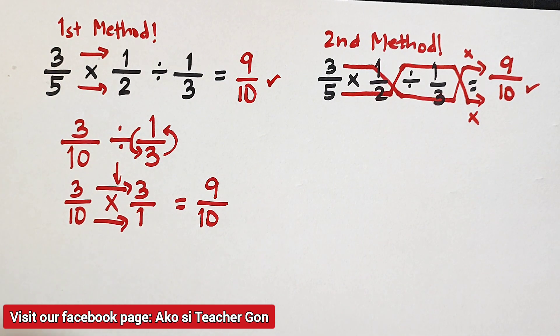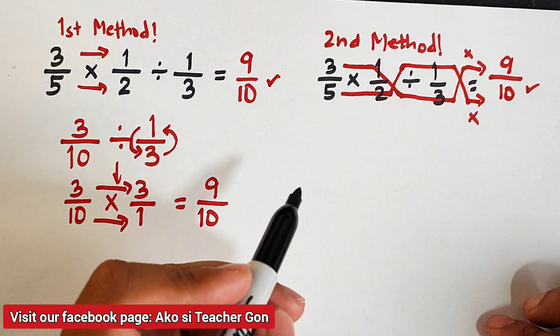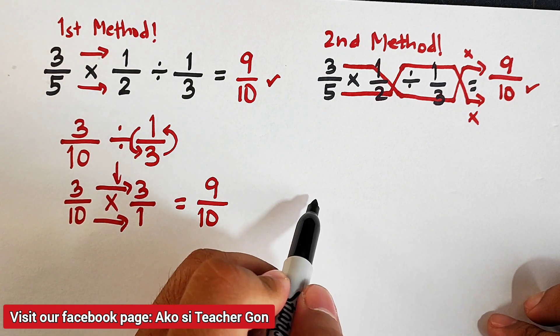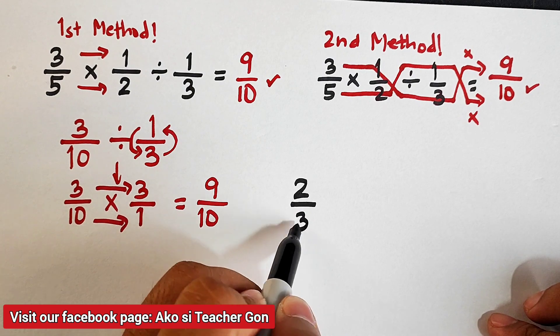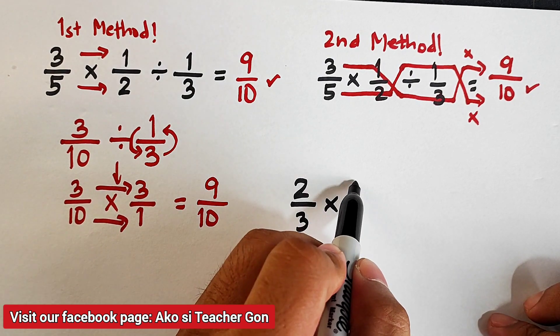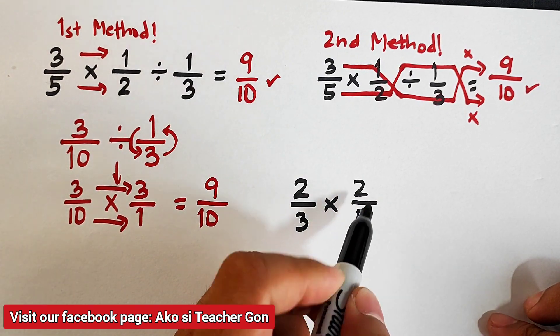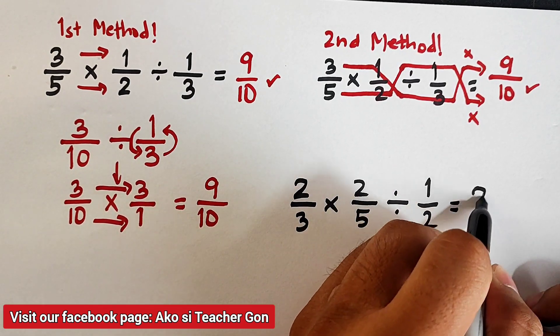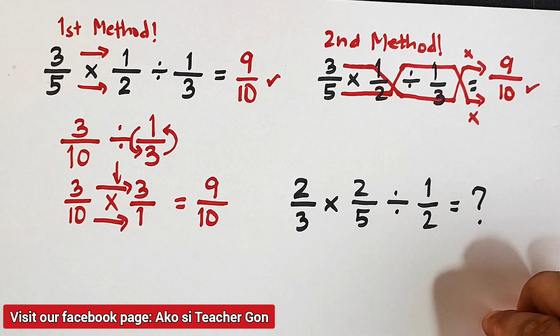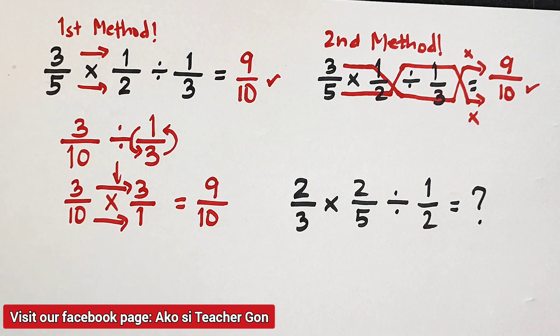Now, as part of our routine here in our videos, I will let you answer this kind of problem. I will try to give you this problem: 2 thirds times 2 over 5 divided by 1 half. I hope to see the answer in our comment section.